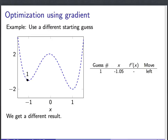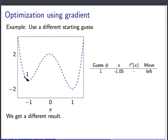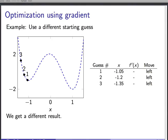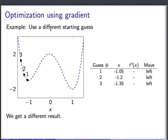Let's see what happens with a different starting guess. Starting just to the left at x equals minus 1.05, the derivative is a little bit negative, so we move to the left. We keep moving left, and this shows that gradient climbing gives different results for different starting guesses. It's not that gradient climbing always finds the same maximum — it depends on where you start. The best this procedure can do is: pick a starting place and walk uphill until you find a hilltop.